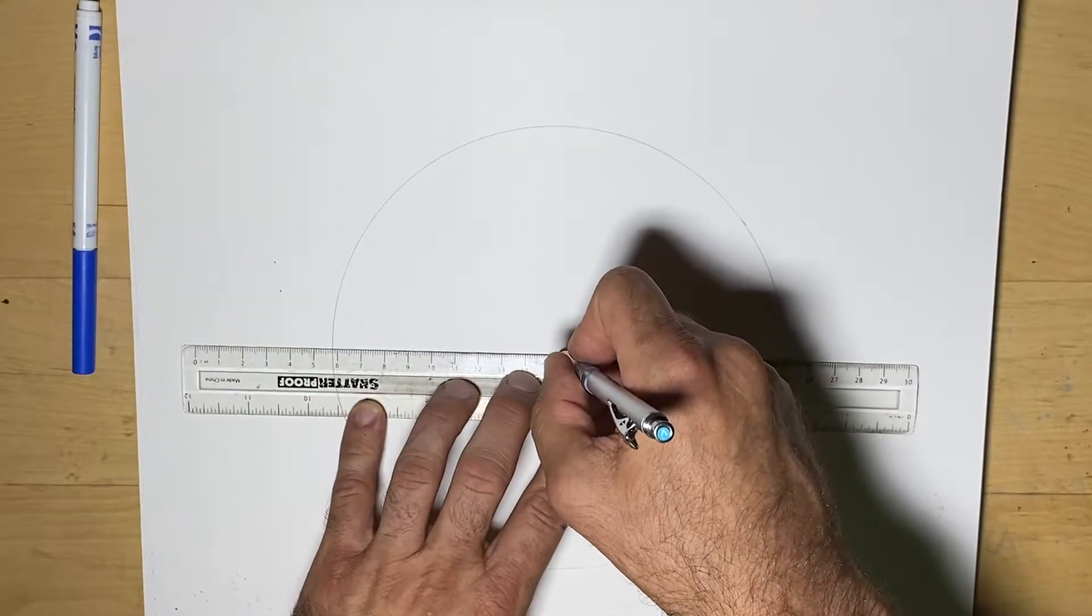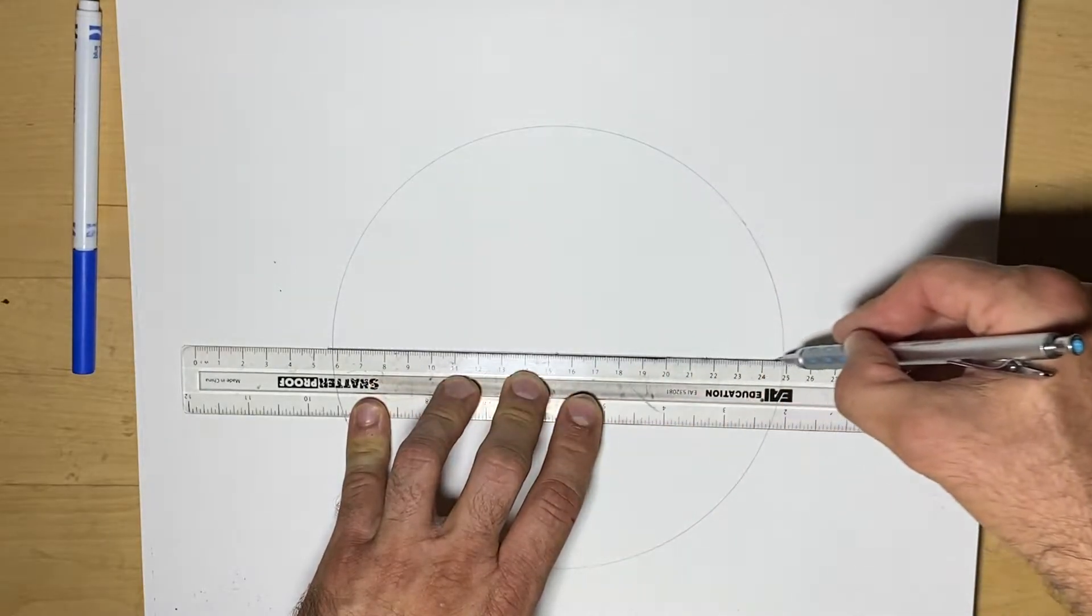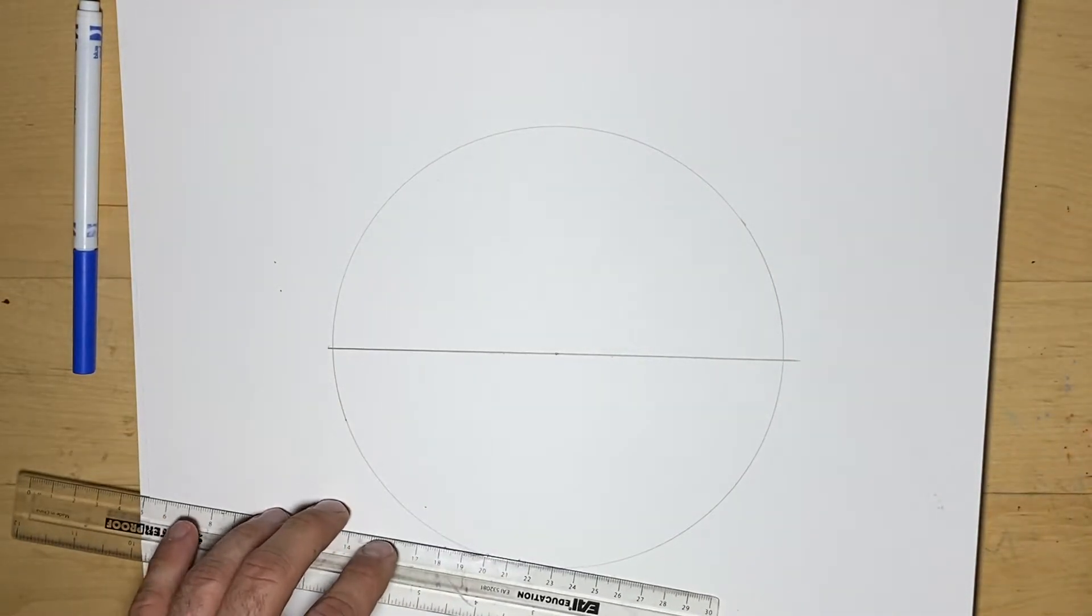I like to put my pencil in the center point first, then line up my ruler—it tends to be more accurate. I'm going to draw this line here, and then we're going to bisect it.